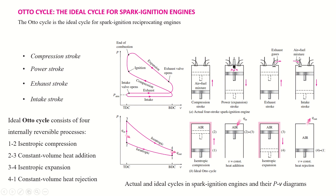After the exhaust stroke there is the intake stroke. In the intake stroke, the inlet valve opens and a fresh air-fuel mixture is induced inside the engine by negative pressure as the piston moves down. All these processes are shown in the PV diagram, starting with the compression stroke.